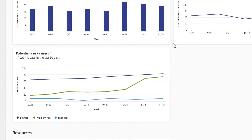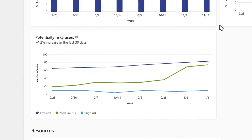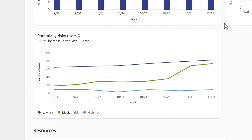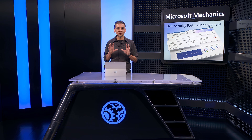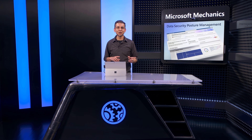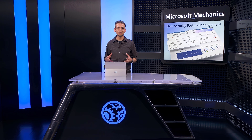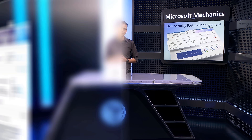For example, we implemented an auto-labeling policy that impacted a lot of files, and we also see that the medium risk user account went up. So what's happened? These are great aggregate views, but I want more specificity. That's where we can add Security Copilot capabilities to drill down into the reasons for some of these trends, why they're happening, and get more details from each.